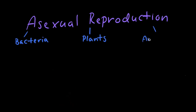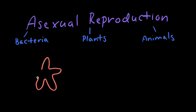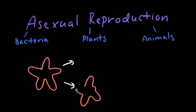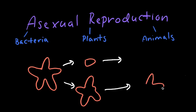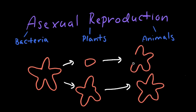Finally, and interestingly, there are various animals that can reproduce asexually. One example is seen in starfish, or sea stars. Some species of starfish can split into multiple parts that then grow into new starfish. And since they have the same genes, each new starfish is a clone of its original.